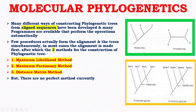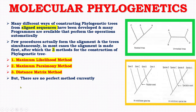The first is the maximum likelihood method. The second is the maximum parsimony method. And the third is the distance matrix method. Currently, there are no perfect methods.